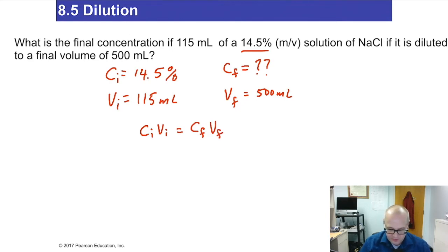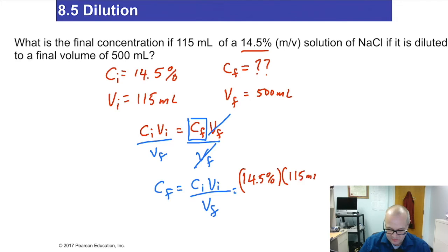And we want to solve for CF. So divide both sides by VF. So they'll cancel. So CF equals CᵢVᵢ over VF. Let's plug some numbers in now. Cᵢ is 14.5%. Vᵢ is 115 milliliters. And VF is 500 milliliters. Notice milliliters are canceling, leaving us in a unit, a percentage. That's a concentration unit. So that's good.